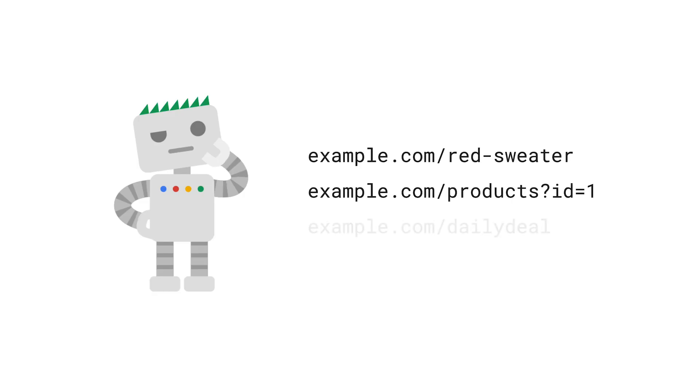Now, let's see what we can do to avoid this. Let's start with duplicate without user-selected canonical. This basically means that Googlebot found the same content with different URLs, and this is the URL that Google didn't choose for indexing. Google Search made a decision in this case because there's no signal in the HTML. That signal is called a canonical tag.